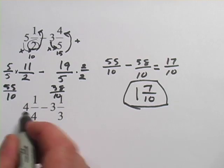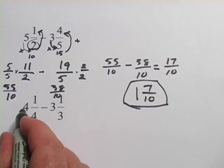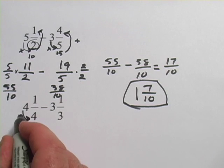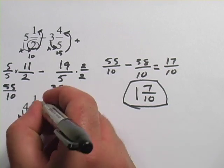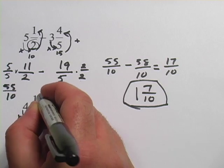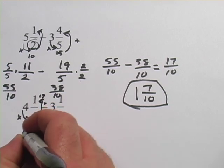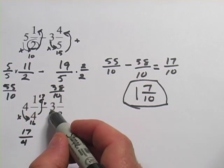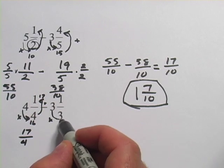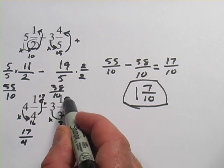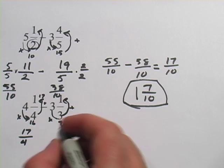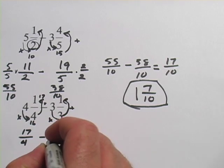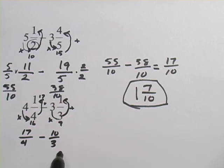First step, we want to get rid of the mixed numbers and turn them into improper fractions. So 4 times 4 is 16 plus 1 is 17 over 4. So 17 fourths. Over here we'll do the same thing. 3 times 3 is 9. 9 plus 1 is 10. So that's 10 thirds.